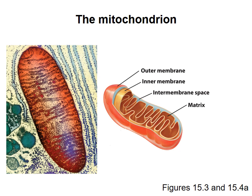The first thing to notice is that there are two membranes — an outer membrane and an inner membrane. The outer membrane is actually pretty porous to polar molecules, because it has relatively large pores or holes in the membrane which allow things up to about 5,000 daltons in weight to cross pretty freely. So the outer membrane is porous.